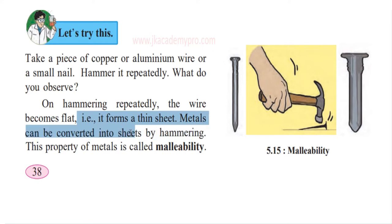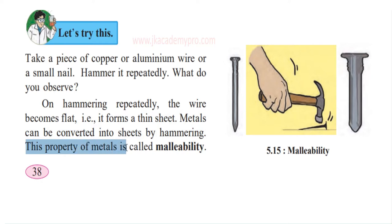Metals can be converted into sheets by hammering — that is how the sheets of many metal objects are made. This property of metals turning into thin sheets is called malleability. This is the first property we learned.